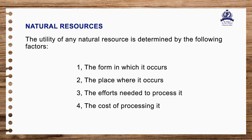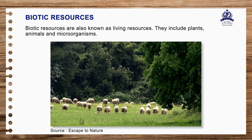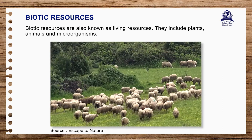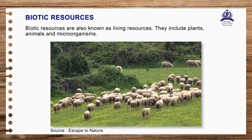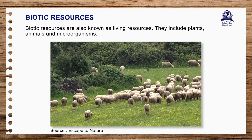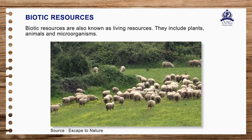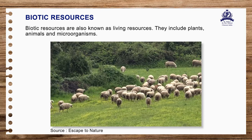Natural resources can be further classified on the basis of their origin, development, renewability and distribution. On the basis of origin — biotic resources, also known as living resources, include plants, animals and microorganisms. Some examples are forests, agricultural crops, and wild and domestic animals. Most biotic resources have the capacity to reproduce, provided the environmental conditions are favorable. Thus they are renewable.